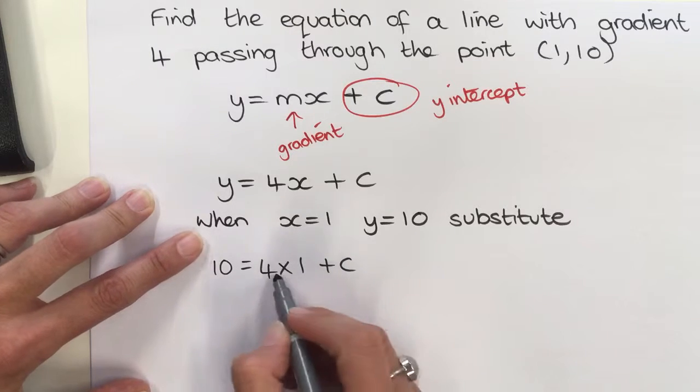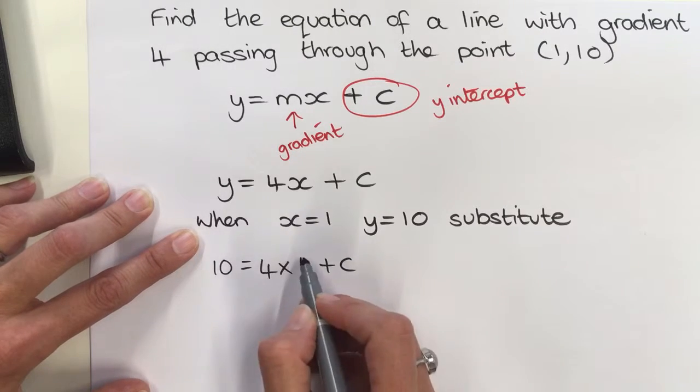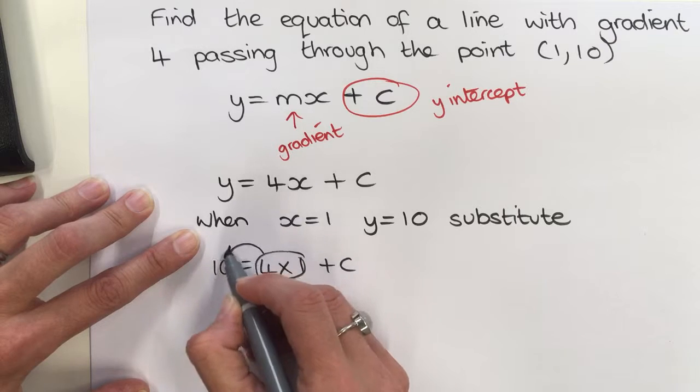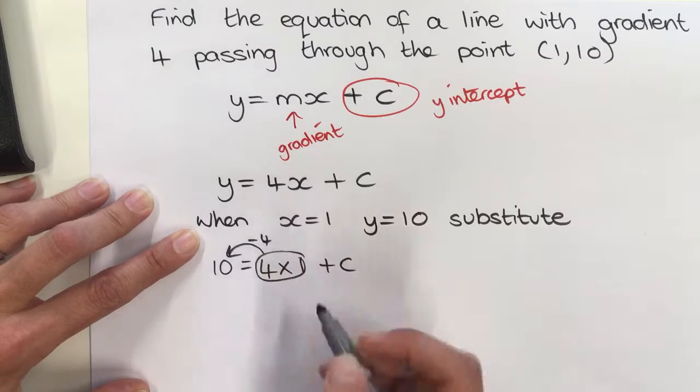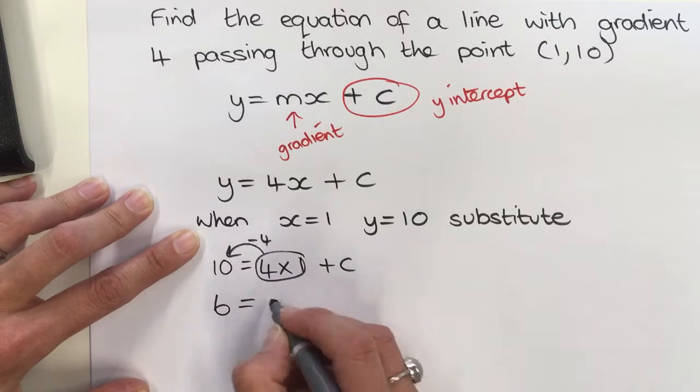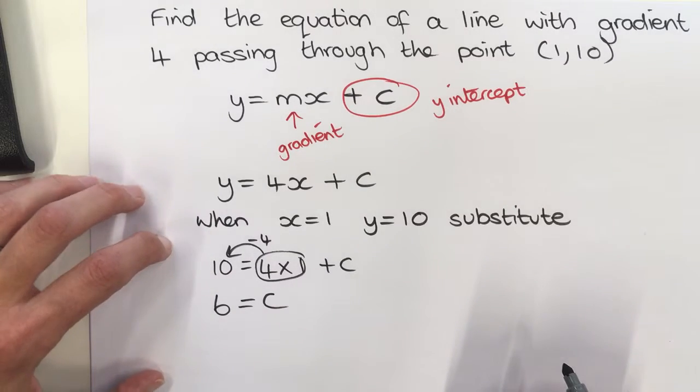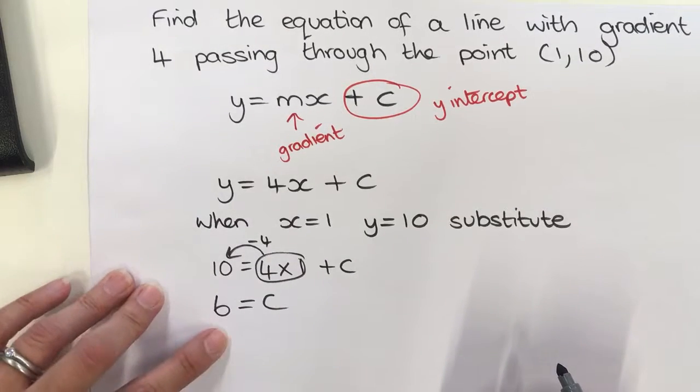So 4 times 1 is 4. If I move that across and subtract 4, then I get 6 = c. So my c value is 6.